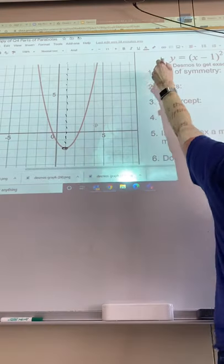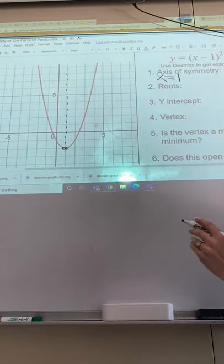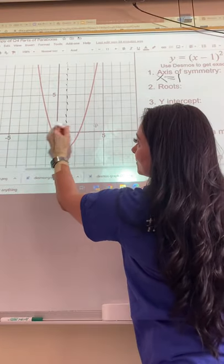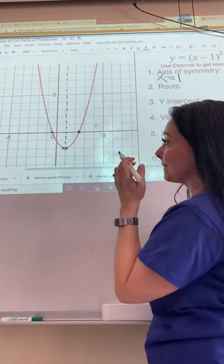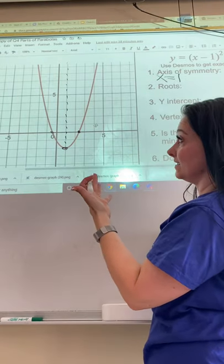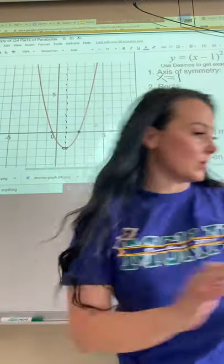is one. We can see that the roots - now here's where things get a little tricky - so the roots are right here, it's where it crosses the x-axis. But I don't know exactly what spot that is because it's not exact like our last example was. So I'm going to pull up Desmos.